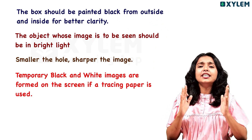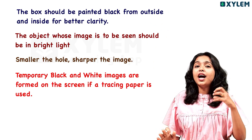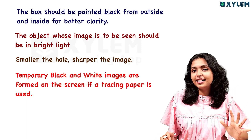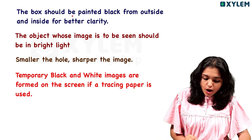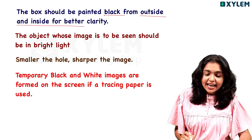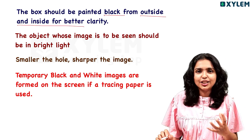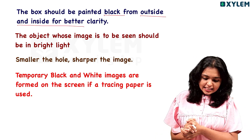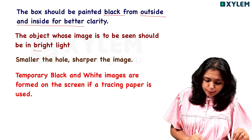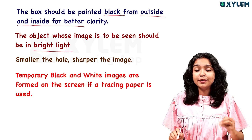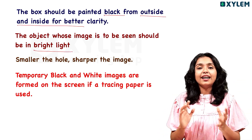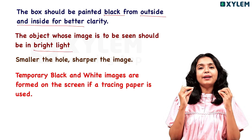First, for better clarity from our pinhole camera, the inside and outside should be painted maximum black. That means the box should be painted black from the outside and inside for better clarity. If you want to focus on an object, there will always be a bright light — for example, sunlight.